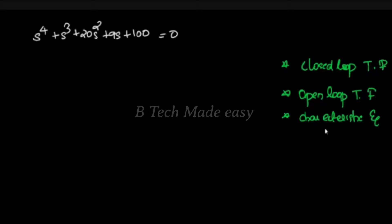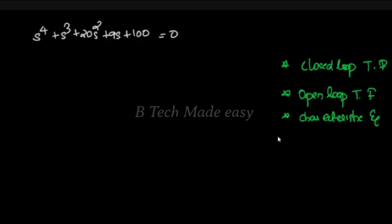I am going to ask questions. In one case, we have to determine the RH criteria for the closed loop transfer function. In open loop, we need to convert it into closed loop and find the characteristic equation. In the third case, there is a characteristic equation direct.